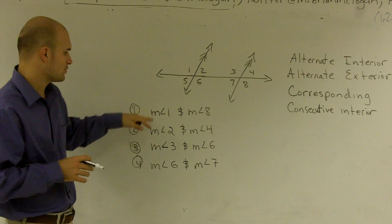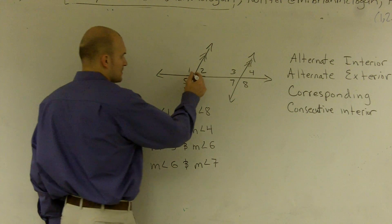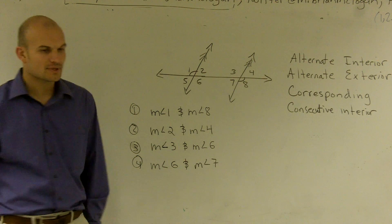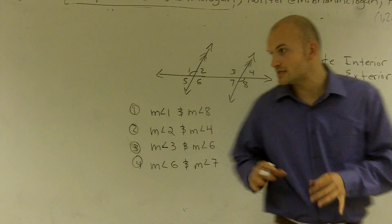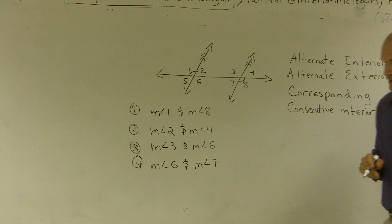So the first one says, let's look at question number one. It says measure of angle one and measure of angle eight. So then what I'm going to do is I'm going to look at how are these two angles related to each other. And I'm going to use the definitions up here for these four types of problems so you guys can see how I can classify these two angles.